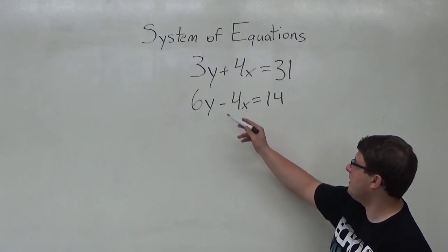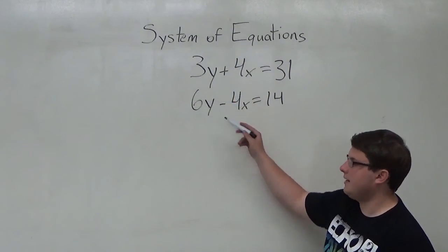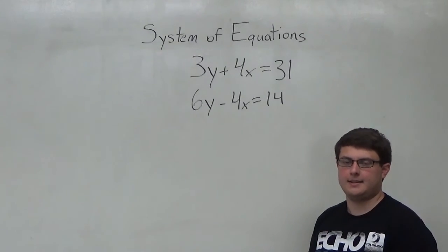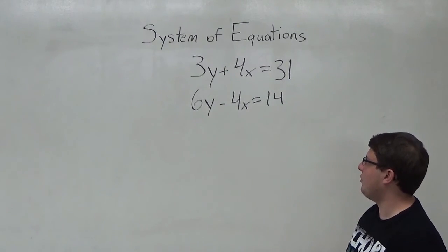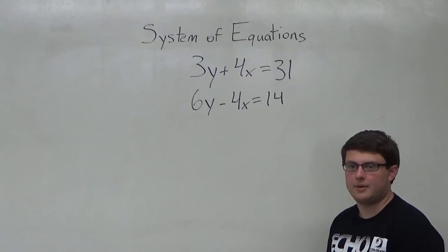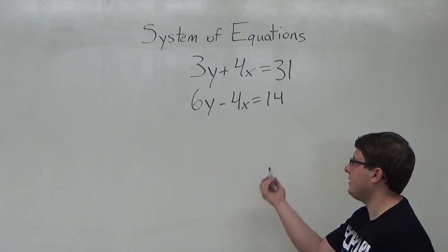So I can see here I can't really manipulate 3y and 6y—I can't add or subtract that to get zero. But what I can do is take 4x and add negative 4x and get zero. So I'm going to do that right now.